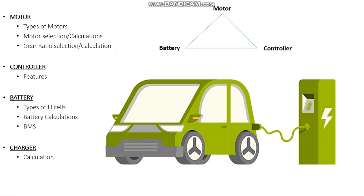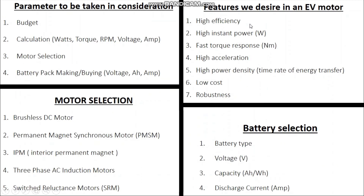We will start with the topic of types of motors, then motor selection calculations, gear selection calculations, then controller features required in an electric vehicle. Then we'll jump on to battery types — maybe lithium-ion cells or whatever cells are available — then battery calculations, BMS, and charger calculations. All these topics will be covered in this complete course.